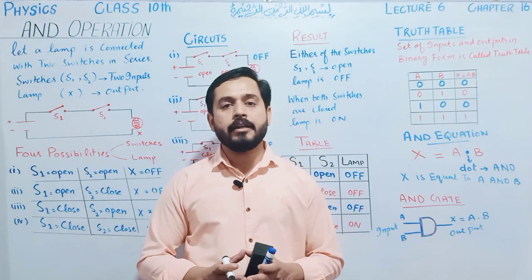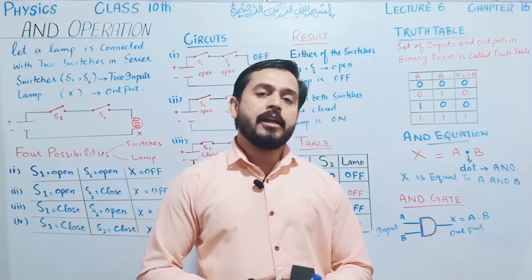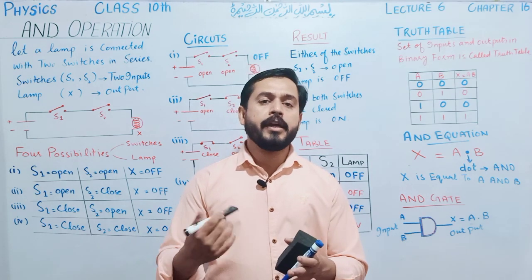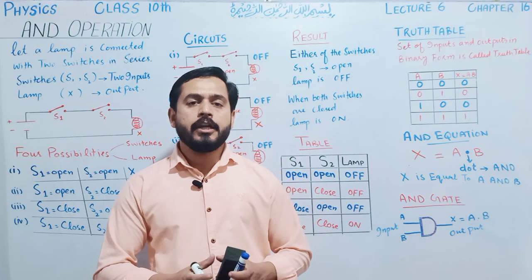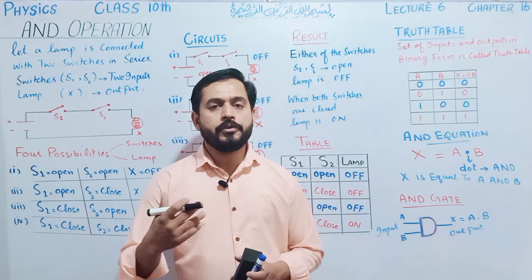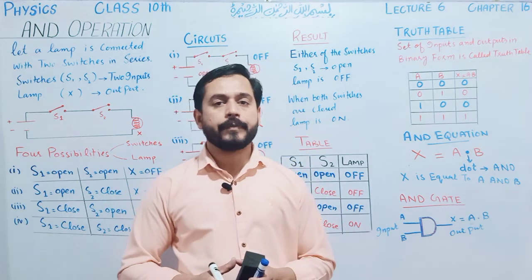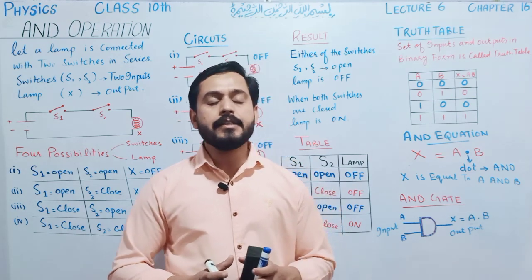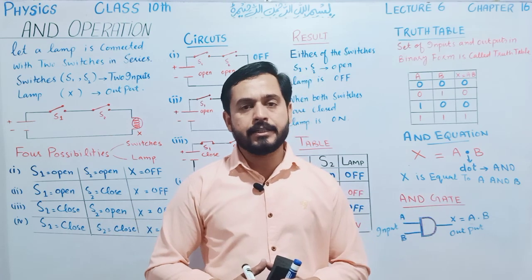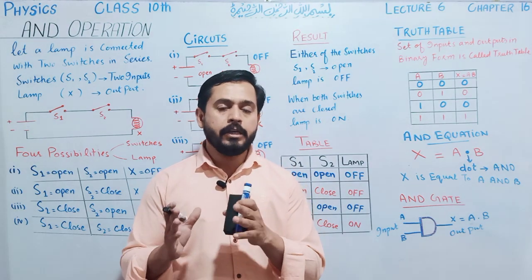Suppose we have two electrical switches. Let one of them be S1 and the other S2. It is not necessary to name them S1 and S2 — you may use different names like A, B. But I suggest you follow the textbook. In our textbook, both switches are referred to as S1 and S2. These two switches are attached in series with a lamp, meaning they are connected one after another in sequence, and they control the lamp as output.